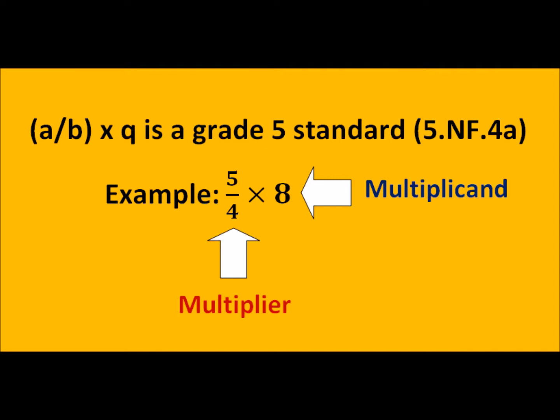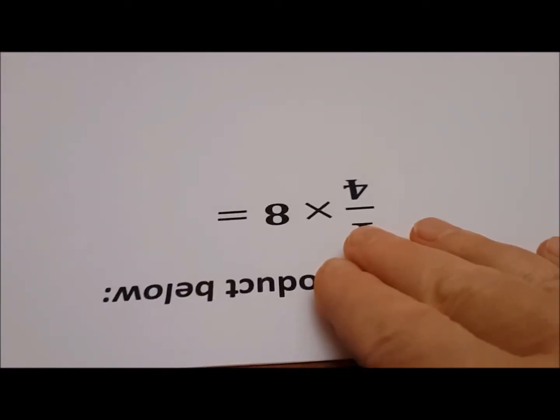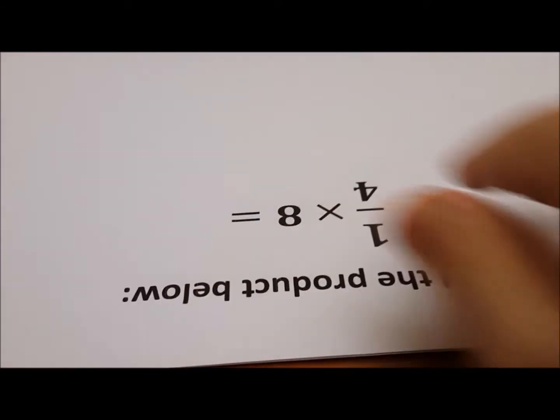The multiplier now tells us to take 5 fourths of those 8 chips. Yiska, I need to know how much is 1 fourth of 8. Would you please place 8 chips over here?